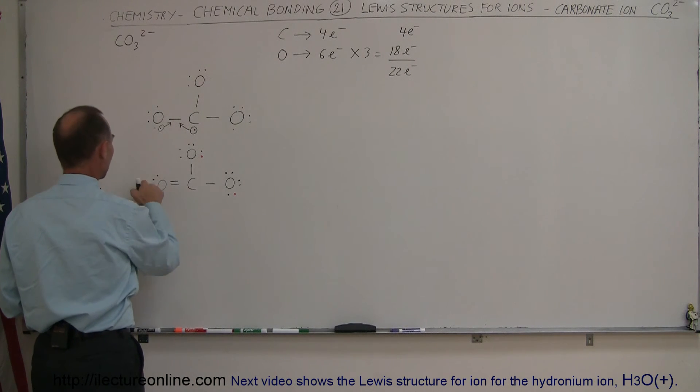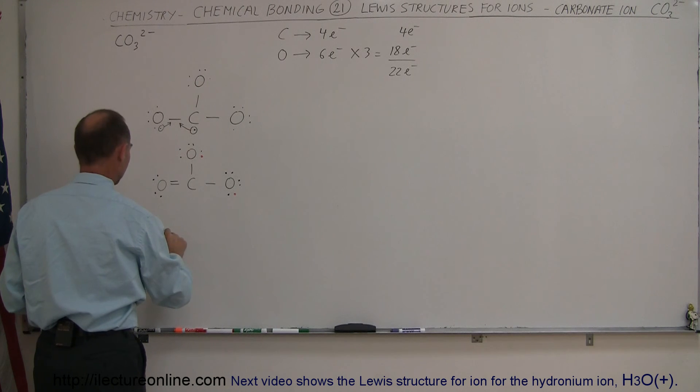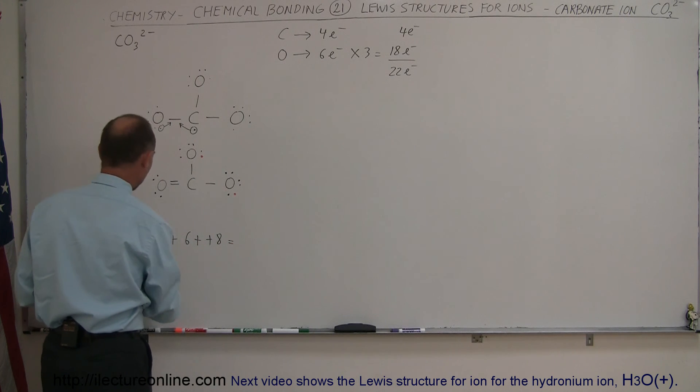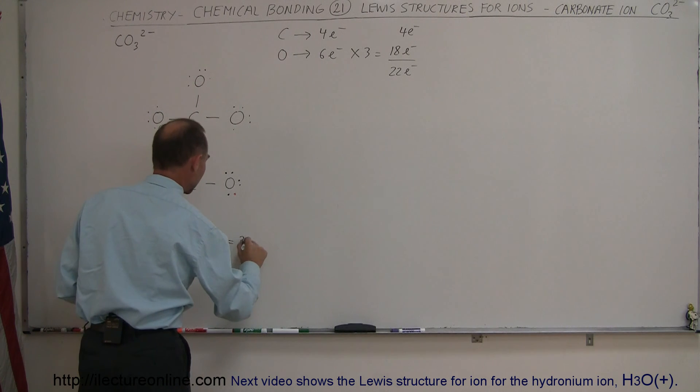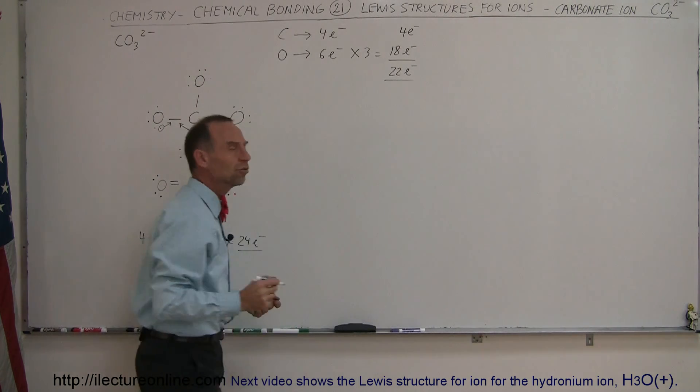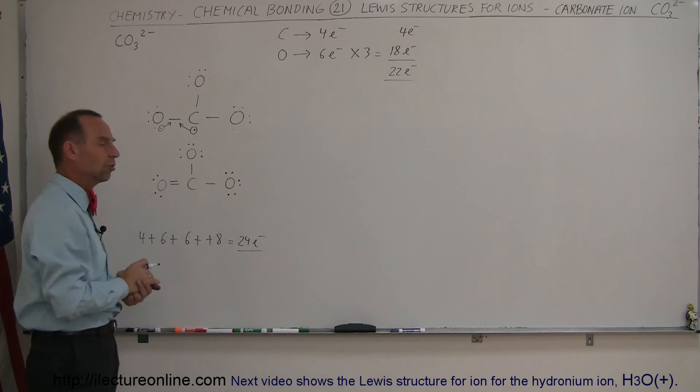Okay, we have four here, plus six there, plus six there, and then two, four, six, eight involved in bonding. So altogether we have ten, sixteen—we have twenty-four electrons, and we started with only twenty-two, which means we acquired two additional electrons.